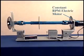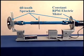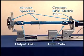This demonstration unit consists of a constant RPM electric motor and 60-tooth sprockets on the driveshaft as well as the input and output yokes.